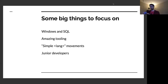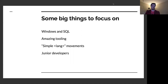Getting into things to try next, I'm going to try to be as specific as I can, because I want these to ultimately be things that people try. I want them to be interpreted as things we could actually go do or advocate for and try to measure the results of. Focusing on Windows and SQL, focusing and advocating for better tooling, the simple Haskell movement, and focusing on hiring junior developers.